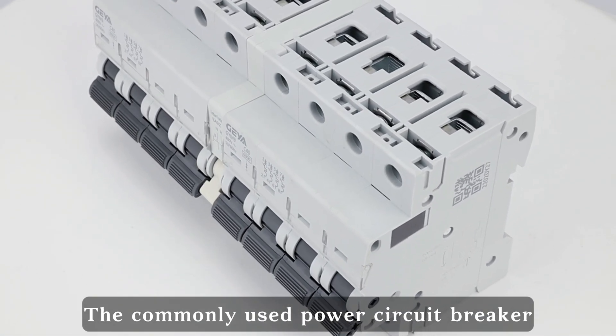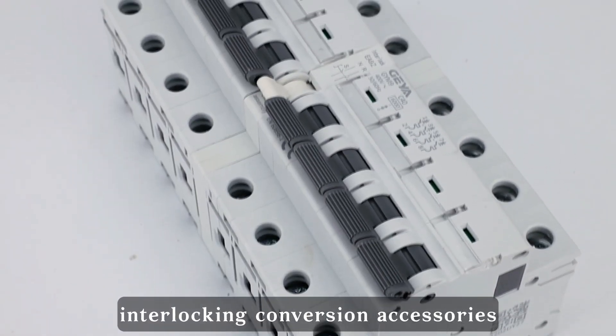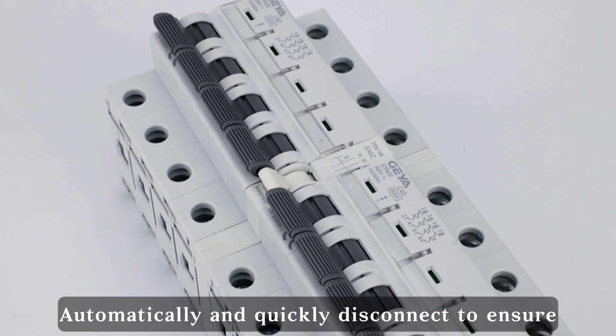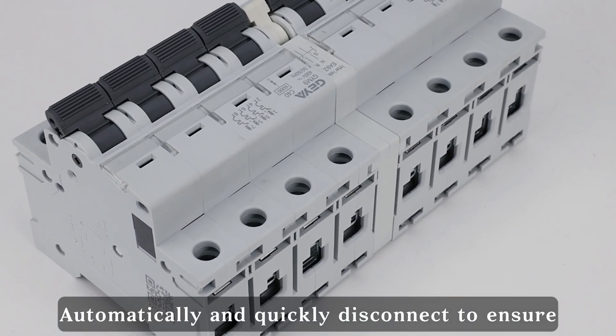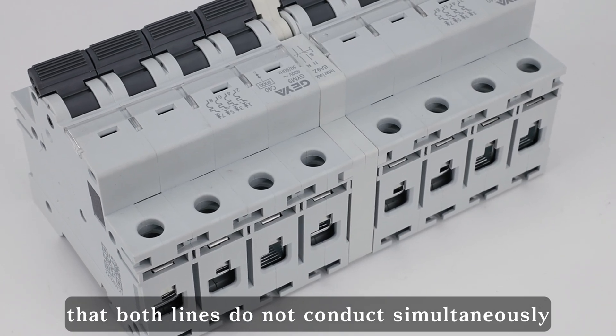The commonly used power circuit breaker will operate under the action of interlocking conversion accessories, automatically and quickly disconnect to ensure that both lines do not conduct simultaneously.